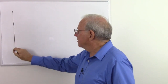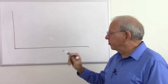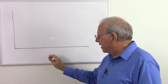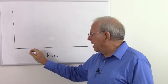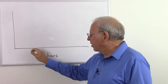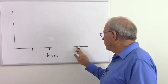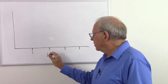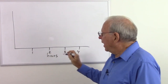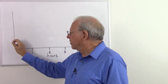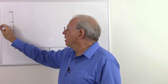Let's make a graph of time versus distance. Time will be on the horizontal axis, measured in hours — 1 hour, 2 hours, 3 hours, 4 hours. On the vertical axis we are going to have distance, measured in kilometers: 1, 2, 3, 4 kilometers.